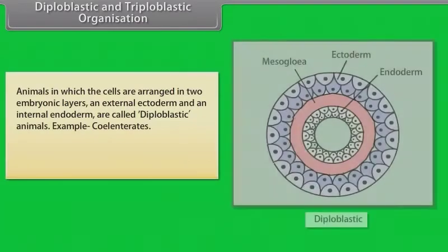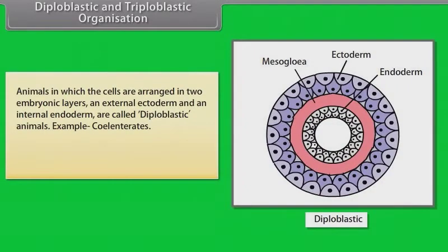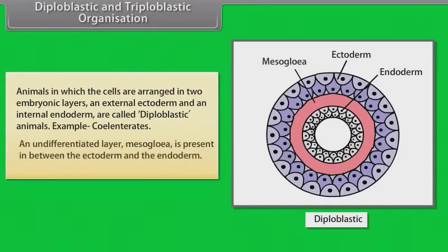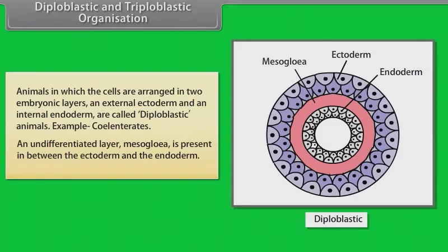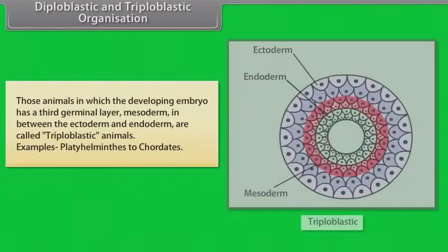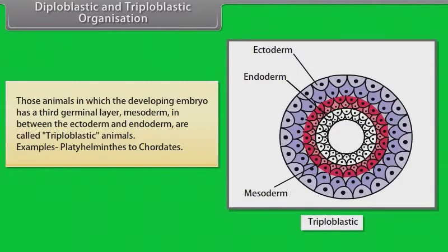In animals in which cells are arranged in two embryonic layers — an external ectoderm and an internal endoderm — are called diploblastic animals. Example: Coelenterates. An undifferentiated layer called mesoglia is present in between the ectoderm and endoderm. Animals in which the developing embryo has a third germinal layer, mesoderm, in between the ectoderm and endoderm are called triploblastic animals. Example: Platyhelminthes to chordates.